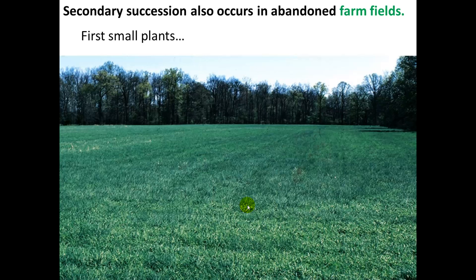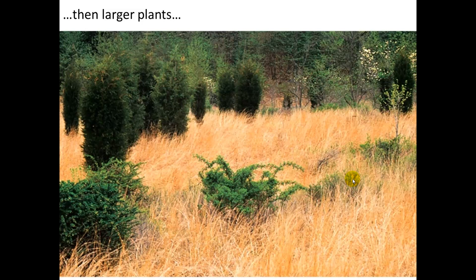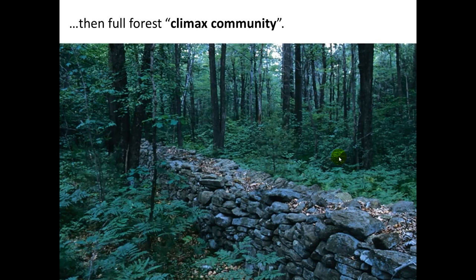Secondary succession can also occur in an abandoned farm field. At one point you would have seen soil with crops growing, but then it was abandoned. First we get small plants and grasses. Over time we get larger plants — some shrubs. And over a longer period of time, maybe a few more decades, we get a full climax community with large trees, small trees, and everything in between.